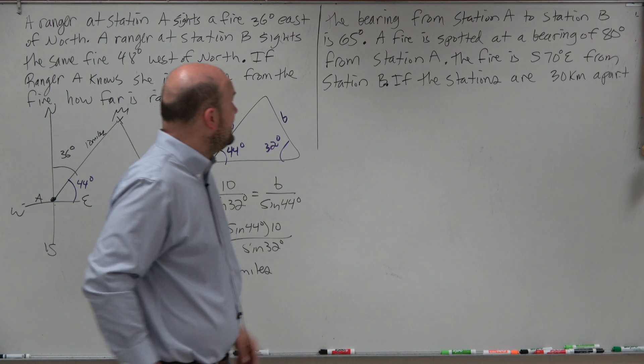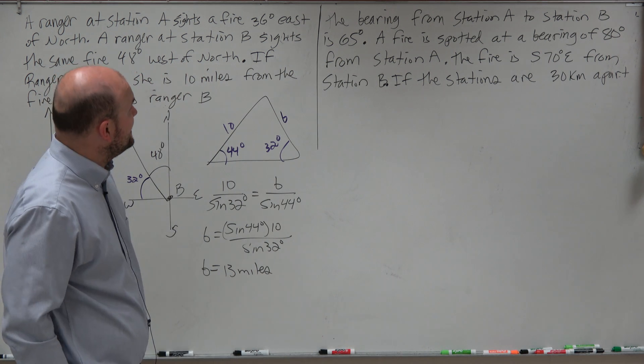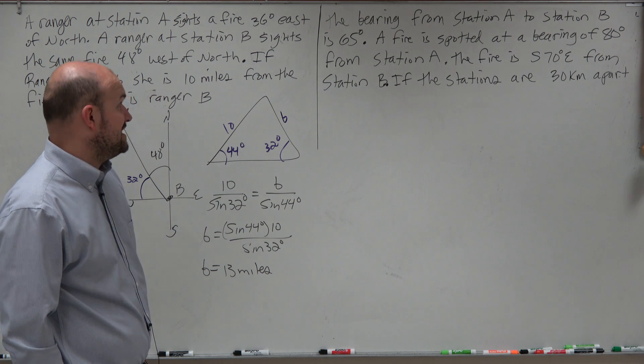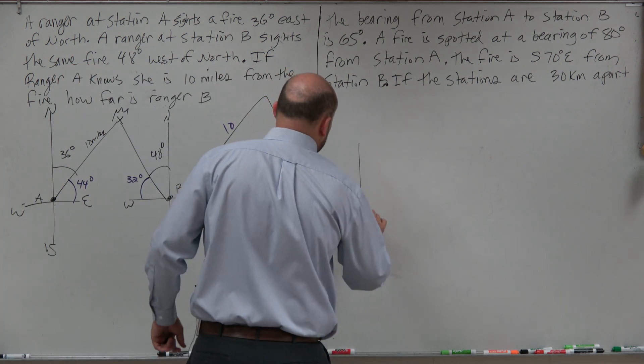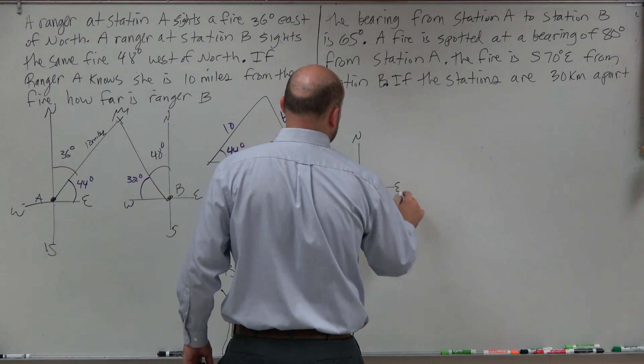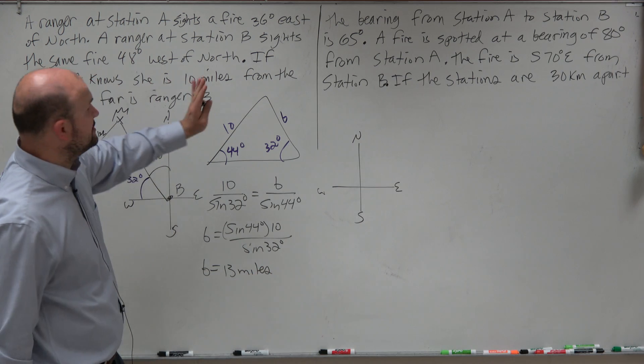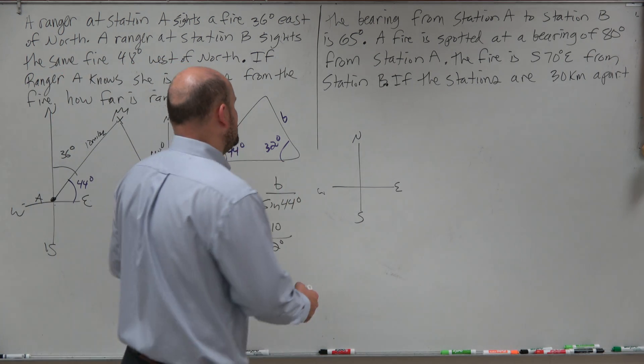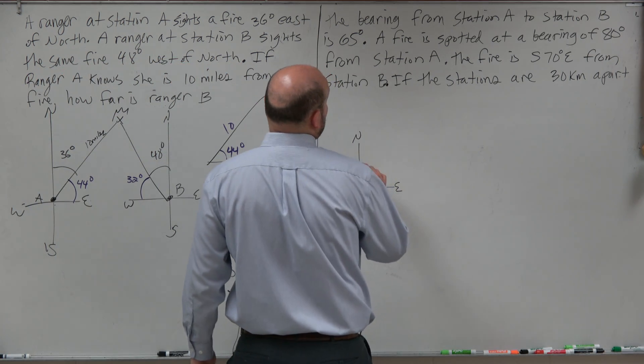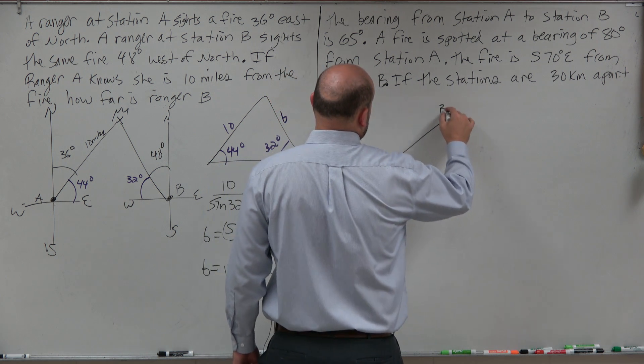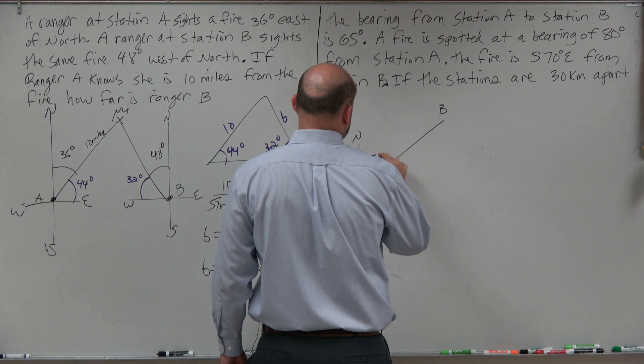For the next one, it says the bearing from station A to station B is 65 degrees. So we have two stations. They are at 65 degrees. Let's go ahead and create a bearing: north, east, south, west. When you just have a bearing, you're not saying due north or due east. You're going to go from due north. So we'll say from A. Here's A, and we'll do 65 degrees, station B.